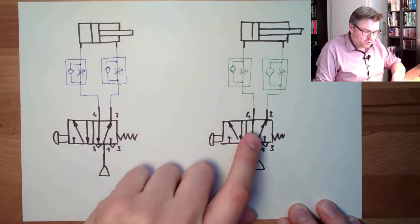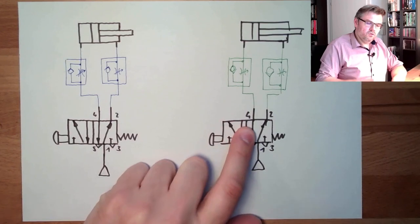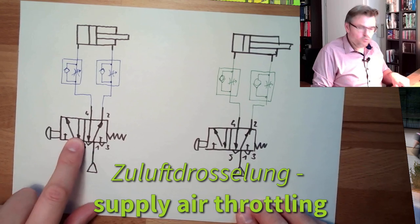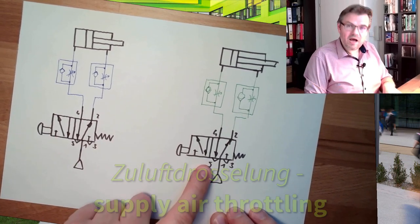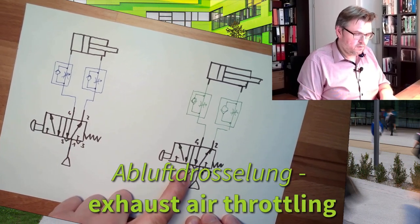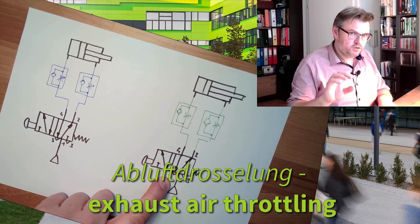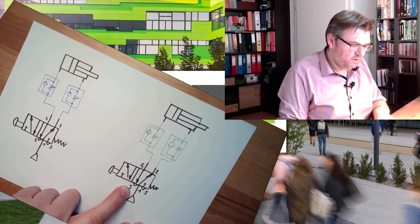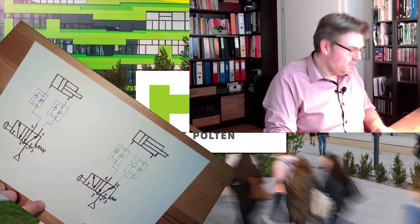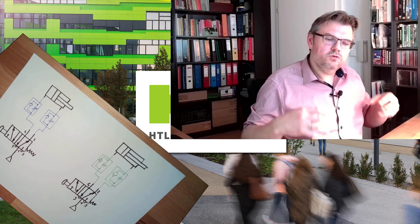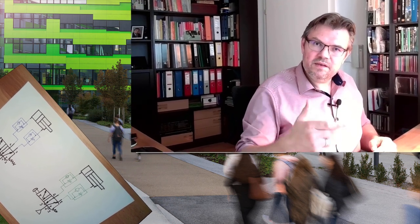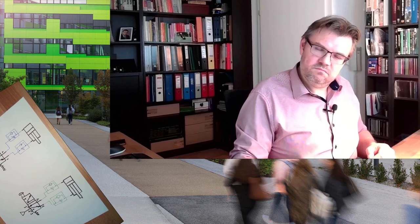So the usual way is to slow down the air when it's leaving. This here is called Zuluftdrosselung. This here is called Abluftdrosselung in German. I will write the English terms. I don't know them by the top of my head now. But this is the preferable one. This is the preferable solution to slow down the air, which is the exhaust air. Because then the stick-slip effect is simply reduced.